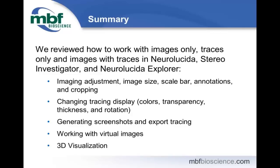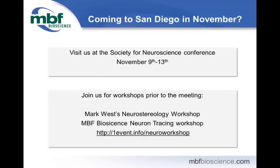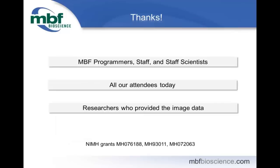In summary, we reviewed how to work with images only, traces only, and images with tracing in Neurolucida, Stereo Investigator, and Neurolucida Explorer. Topics included image adjustment, image sizes, scale bars, annotations and cropping, changing tracing displays, generating screenshots and exporting traces, working with virtual images, and 3D visualization. Please stop by our SFN booth to meet us and see the 3D visualization with 3D glasses. All these cool tools are made possible by our programmers, staff scientists, and the researchers using our software and letting us know what they need.